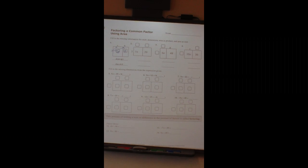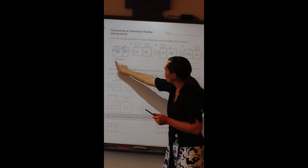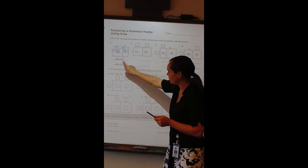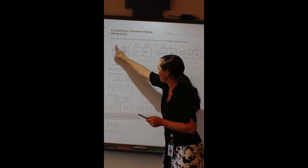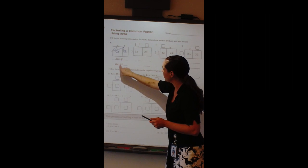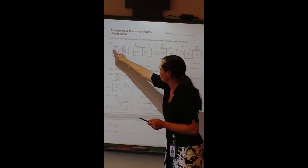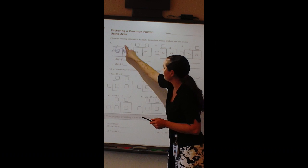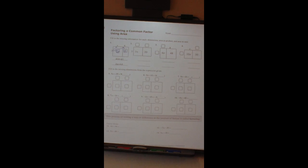And so then in the lines underneath it, we just wrote what it would look like before we did our distributive property, right? 2 times x plus 6. And then the bottom line, we actually show that multiplication. 2 times x is 2x, and 2 times 6 is 12.